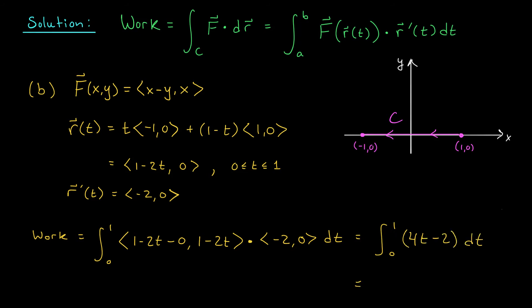And now an antiderivative is 2t² - 2t. When we evaluate from 0 to 1, you'll find that everything cancels out, and we're left with a final answer of 0.